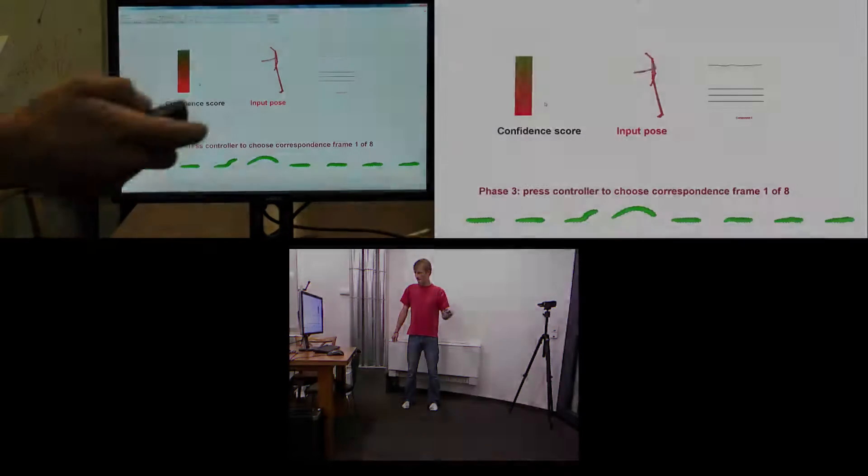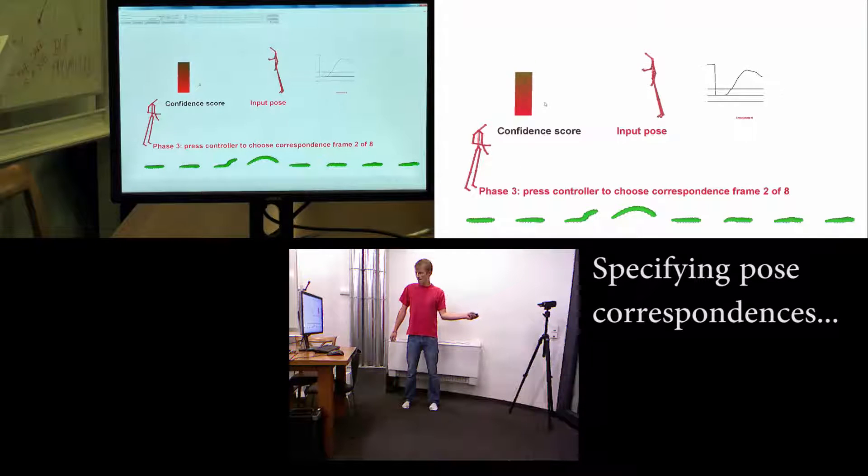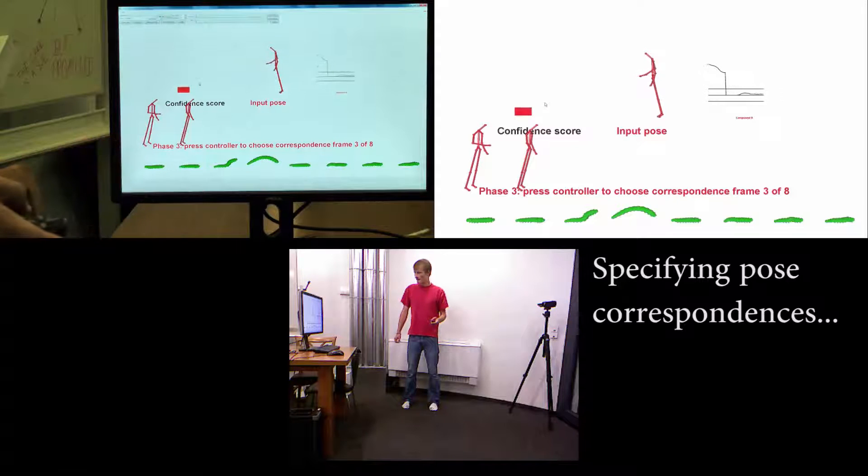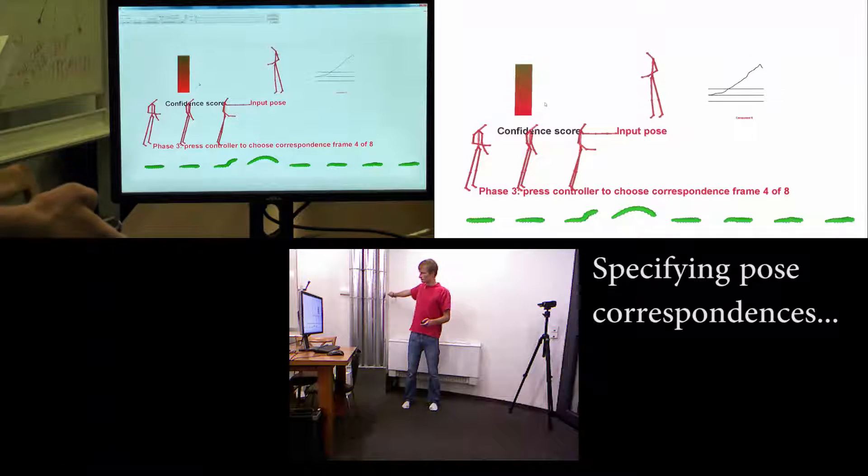Our approach allows fast, flexible and intuitive character control between widely different source and target shape and motions. We begin by interactively defining four to eight correspondences, which is fewer than existing methods.